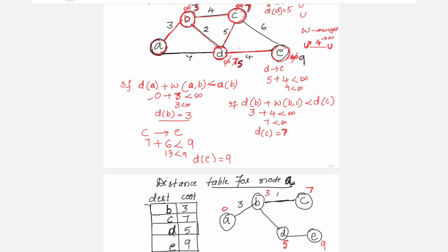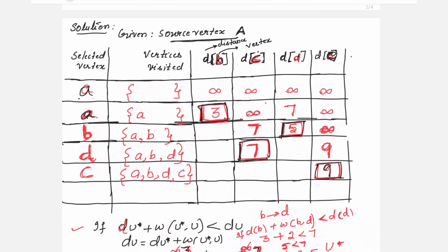The path costs are: A to B = 3; A to C = 3 + 4 = 7; A to D = 3 + 2 = 5; A to E = 3 + 2 + 4 = 9. This is how you carry out all the steps for the algorithm.